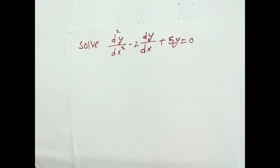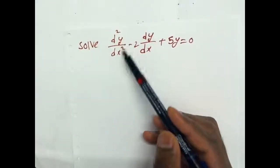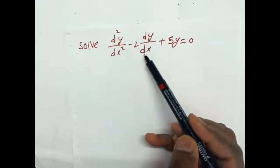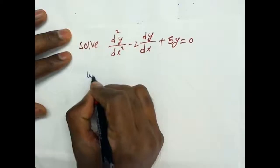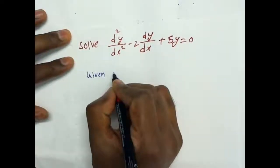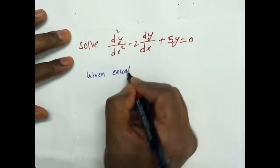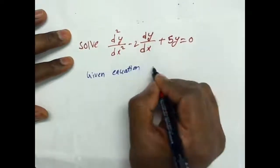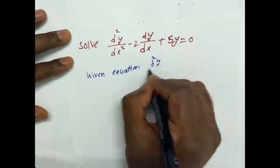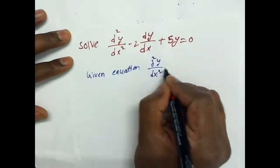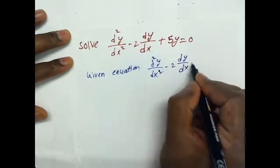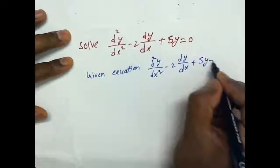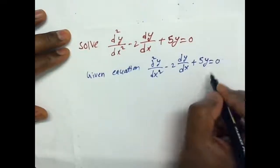All right friend, here are ma'amu differential equation example. The given equation is d squared y by dx squared minus 2 into dy by dx plus 5y equal to 0.